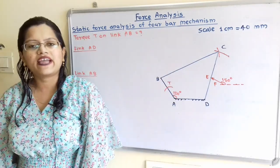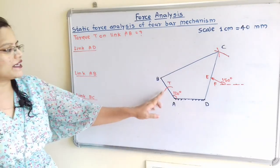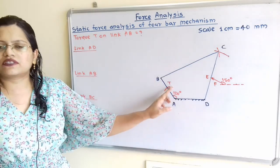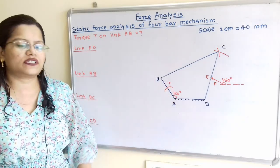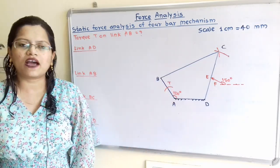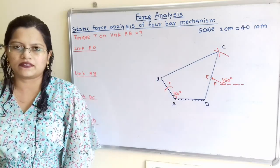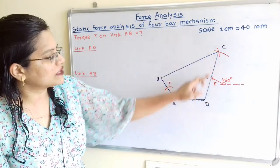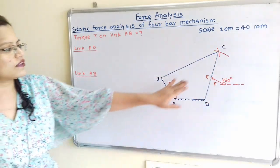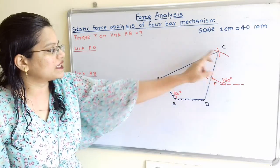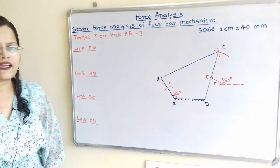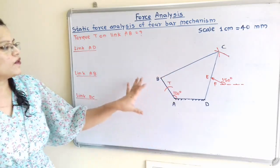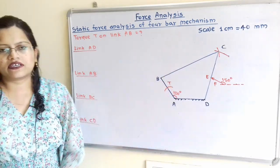The question asks us to find the torque T on link AB. Its direction and magnitude are currently unknown, to be found by graphical method. Force F is applied to link CD and is transmitted through link CB to link AB. To bring the 4-bar mechanism into equilibrium, we must apply torque T.